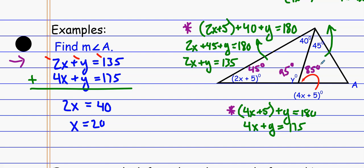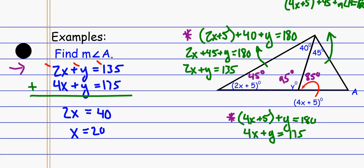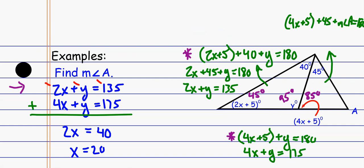Now look at the left triangle: 45 plus 85 plus whatever angle A happens to be equals 180 degrees. That gives me 130, so angle A equals 50 degrees. The question didn't ask me to solve for all of those things, so I didn't need to find every angle — though I did need the 85 degree angle. Make sure you're answering what the question has asked you for.